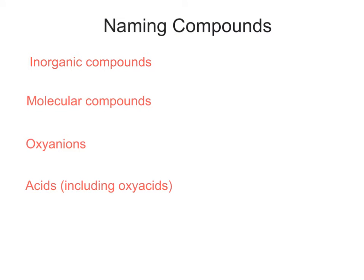Today we will talk about how we go about naming compounds. In General Chemistry 1 we will talk about naming compounds that are either inorganic compounds, molecular compounds, or oxyanions. At the end we will talk about acids, including what are called oxyacids.